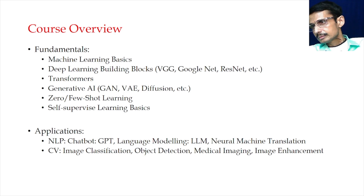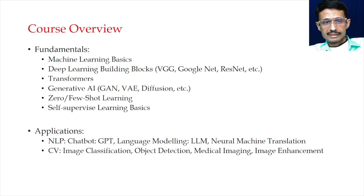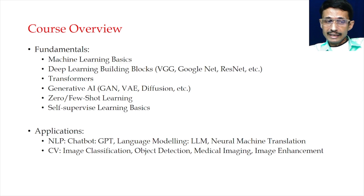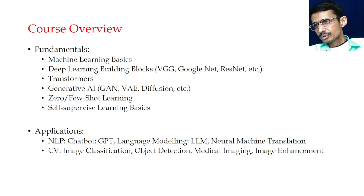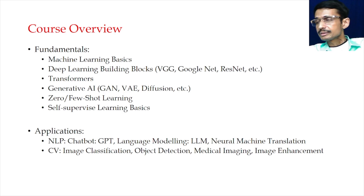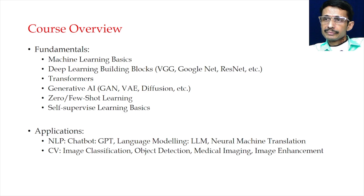Then we touch upon different important deep learning architectures for Generative AI, including zero-shot learning, few-shot learning, and self-supervised learning. Once we know these architectures, we jump to applications in NLP and vision — very recent topics like GPT, LLMs, neural machine translation, and so on. Then vision applications including image classification, object detection, medical imaging, image enhancement, and more are discussed on the basis of these machine learning and deep learning frameworks.